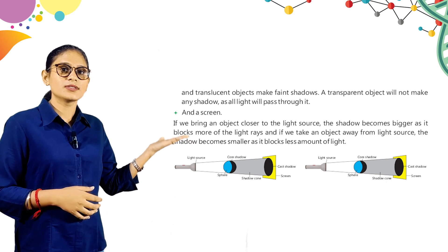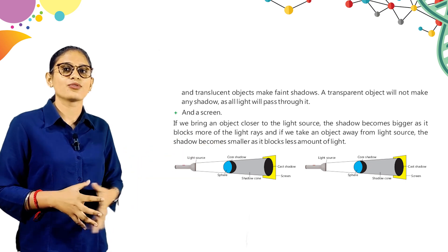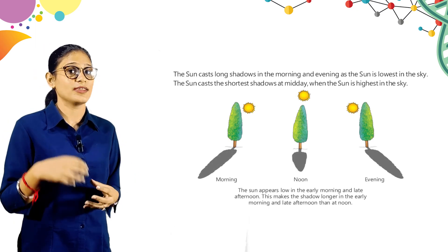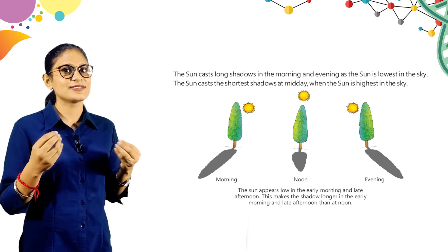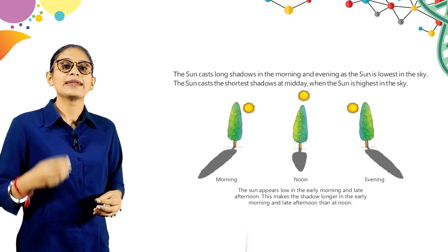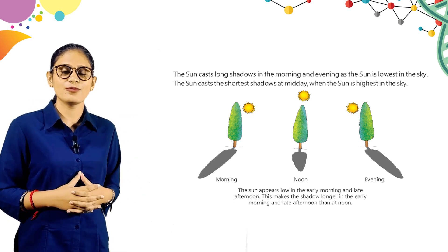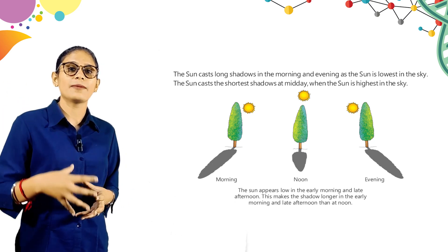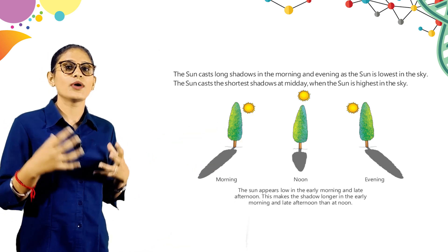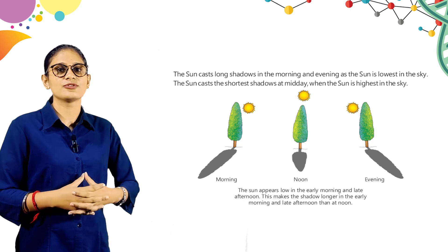Look at this picture — here is the light source, sphere, core shadow, shadow core, cast shadow, and space. The sun casts long shadows in the morning and evening as the sun is lowest in the sky. The sun casts the shortest shadow at midday because it is directly overhead. The sun appears low in the early morning and late afternoon, making shadows longer at those times than at noon.